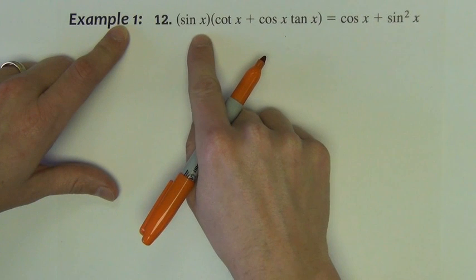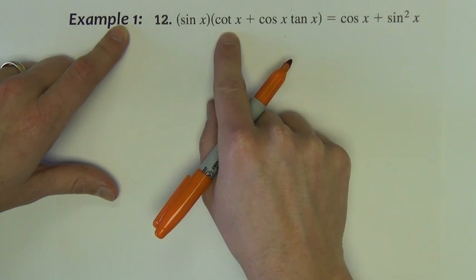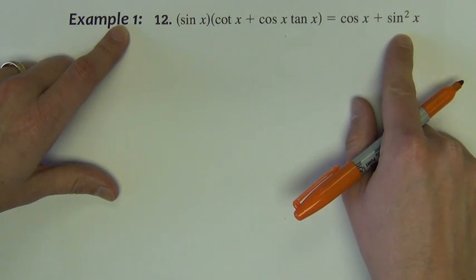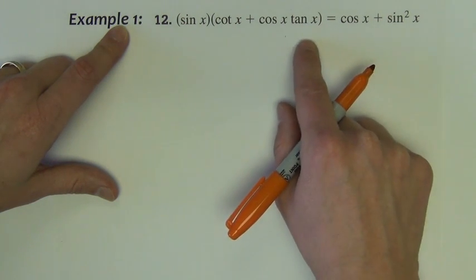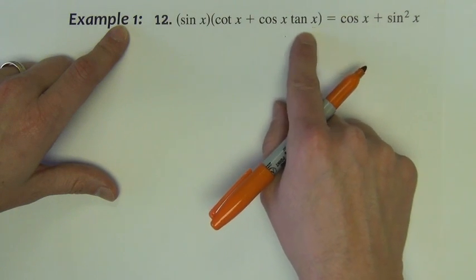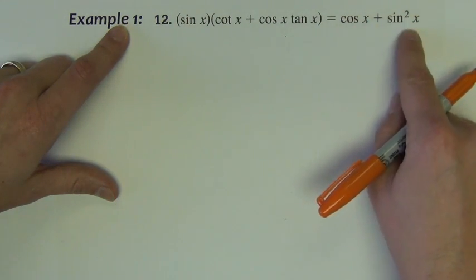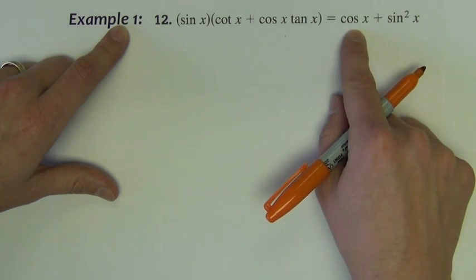Example number one says sine x times the quantity cotangent x plus cosine x tangent x is equal to cosine x plus sine squared x. We're going to try and prove or verify that what we see on one side of the equation is identical to what we see on the other side of the equation.